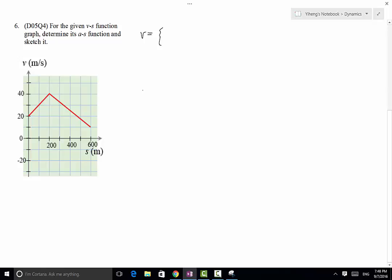The first one has a slope of 40 minus 20 over 200 minus 0, so this is 0.1. This is going to be 0.1s plus a constant. And when s equals 0, v equals 20, so this constant right here is 20. This is when s is between 0 and 200 meters.